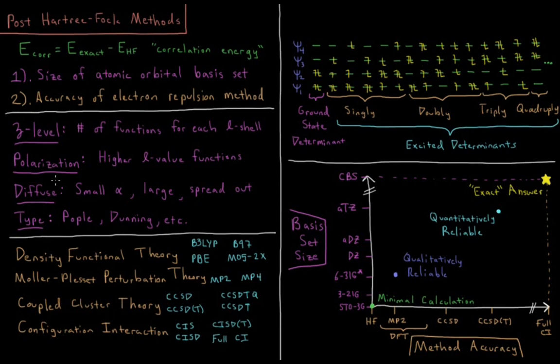And then for Dunning sets, this D or T indicates the zeta level, so double zeta, triple zeta, quadruple zeta, etc. And the letters in there stand for augmented, correlation consistent, polarized valence, double zeta. So correlation consistent, polarized valence, double zeta for the lowest set there. But that's getting into a lot more details there.